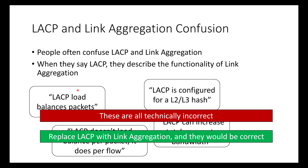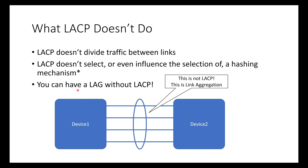What LACP doesn't do is divide traffic between links. It doesn't select or even influence the selection of a hashing mechanism. There is an update to the link aggregation standard that includes a new TLV with the ability to suggest or report which hashing mechanism is used, but as far as I know, no vendor has implemented it. You can have LAG without LACP — they're not the same technology.